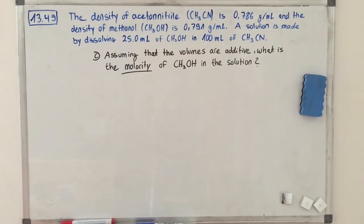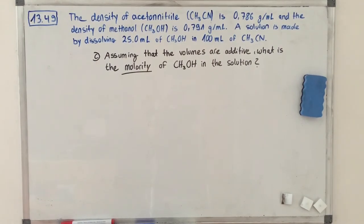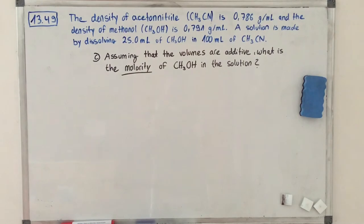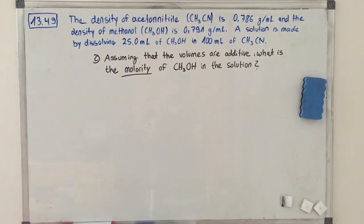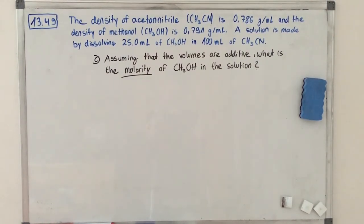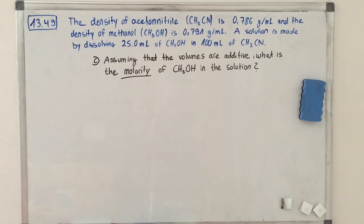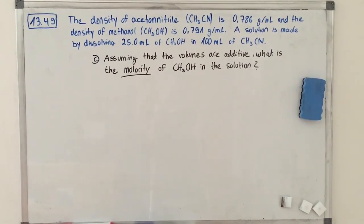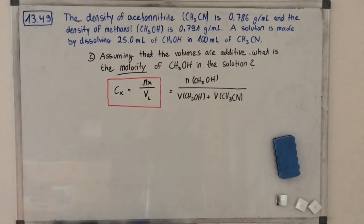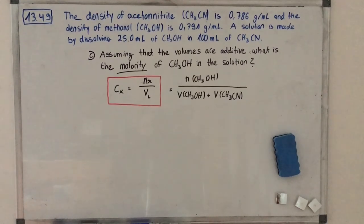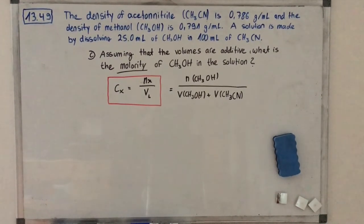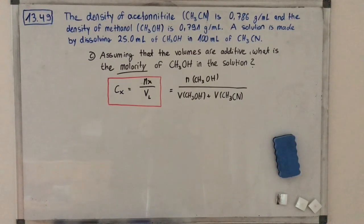The last part of task 1349 is to calculate the molarity of methanol, assuming the volumes are additive. Molarity indicates how many moles of solute are in one liter of solution — it relates moles of solute to volume, not mass like molality. Writing this formula and applying it to the task: it is the number of moles of methanol divided by the total volume of the solution.